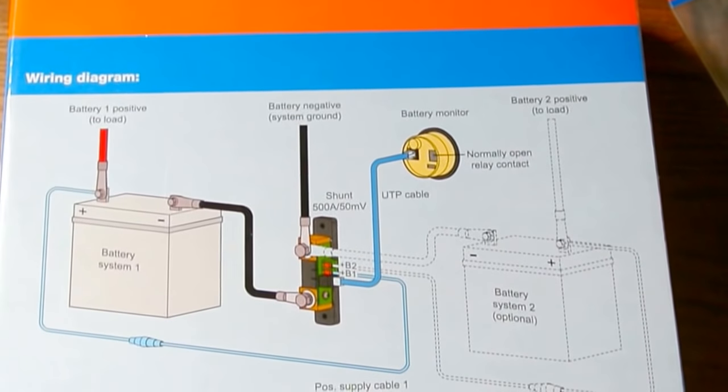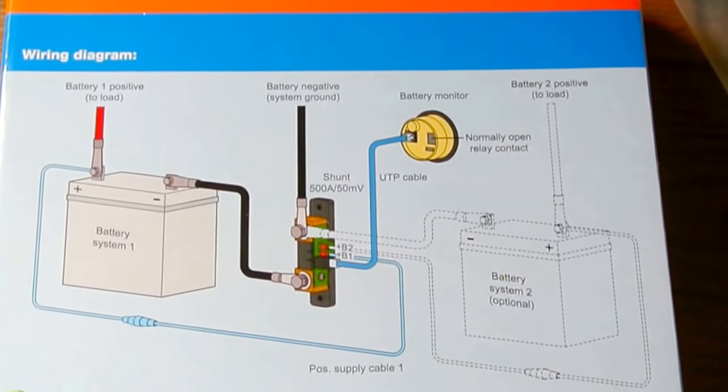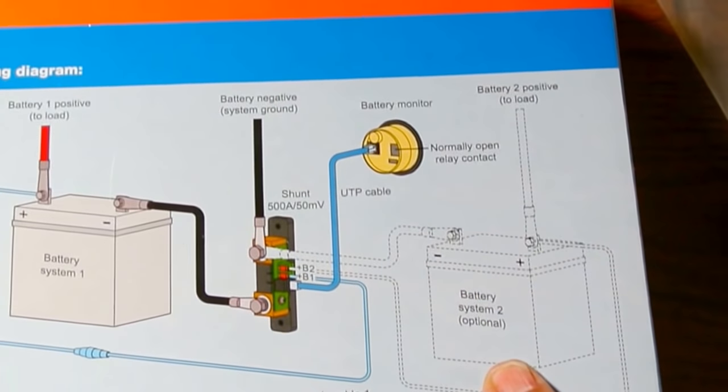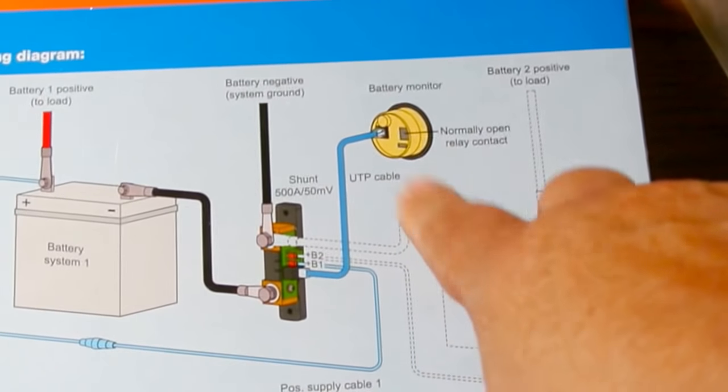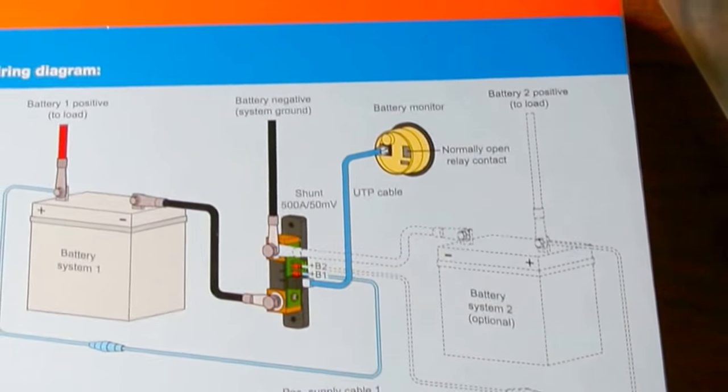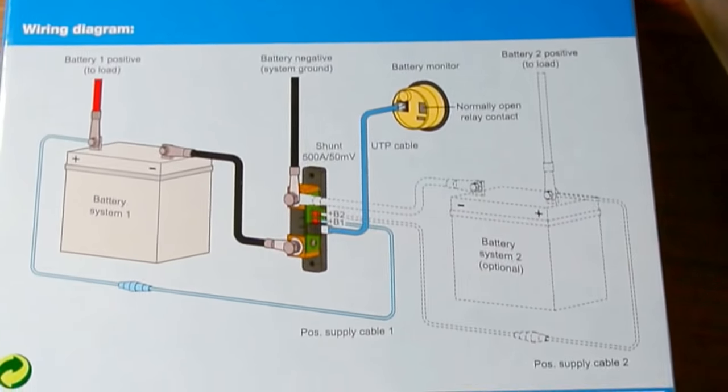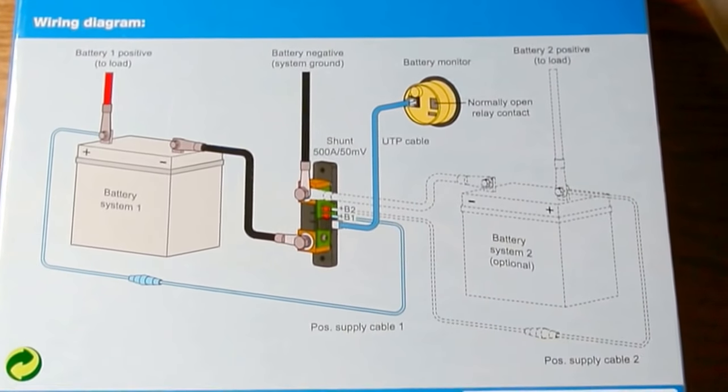Now they have an upgraded version called the BMV702 which I did not buy. That allows you to monitor more than one battery plus has a temperature probe, but with this RV I didn't think I needed to go to that extent.